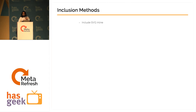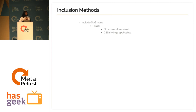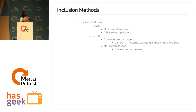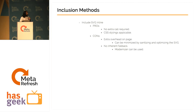The best way to include an SVG is to include it inline into HTML. The pro is that you do not need any extra network call to download the SVG file, and CSS styling is applicable. The cons are the extra overhead on the page for the data itself, which can be minimized by sanitizing and optimizing the SVG, and there's no inherent fallback — but you can take care of that with Modernizr.